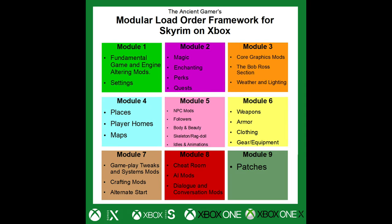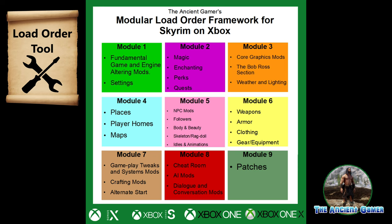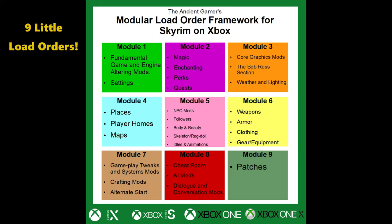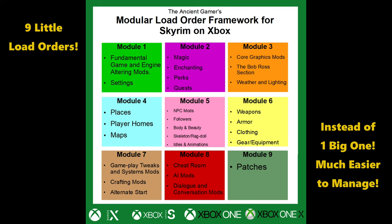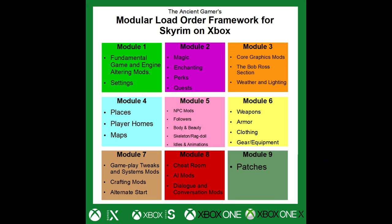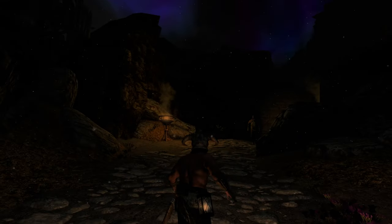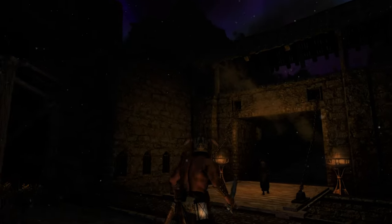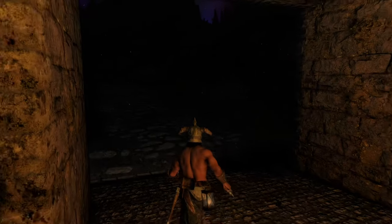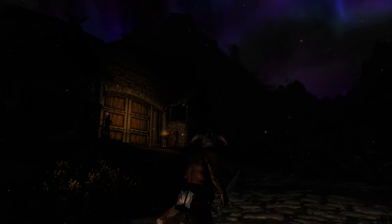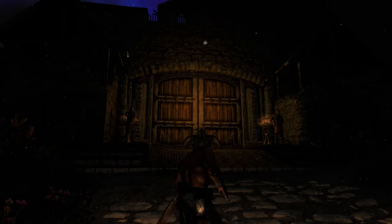Let's get to the tool itself. I call it the Ultimate Modular Load Order Framework. The basic idea is that instead of having one large long load order, which can be hard to wrap your mind around, you have nine smaller independent load orders, or modules. Each module can and should be worked on separately. This tool has been organized around overwrites — it's important to understand overwriting, what it is, and how to make it work for you.